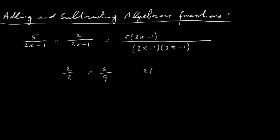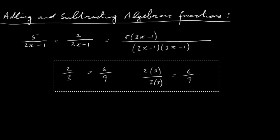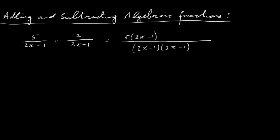We've just multiplied the numerator by 3x minus 1 and the denominator by 3x minus 1. Now let's do the second fraction. We write in the plus sign to separate the two fractions. Looking at the denominator of the second fraction, we have 3x minus 1. To turn it into our common denominator we multiplied by 2x minus 1, so we must multiply the numerator by 2x minus 1 as well. We take our 2 and multiply it by 2x minus 1, so this fraction is exactly the same as before.